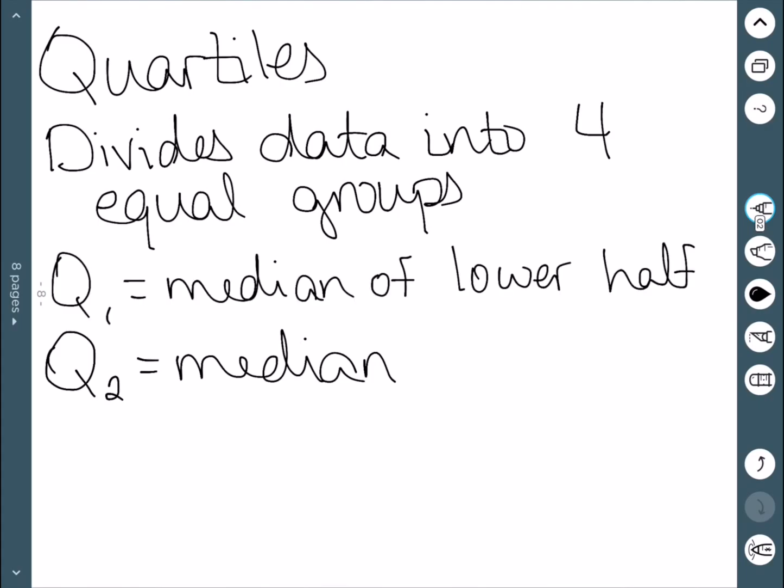Q1 is the median of the lower half of the data, everything that's below the median. Q3 is the median of the upper half, everything that's above the median.